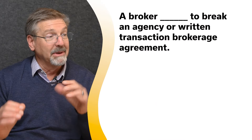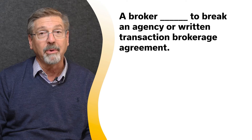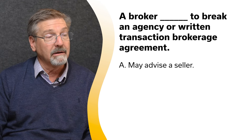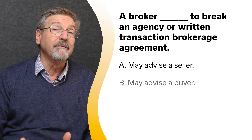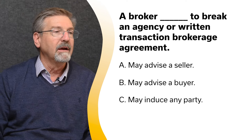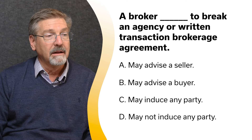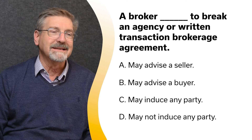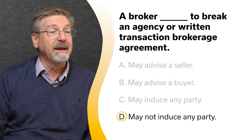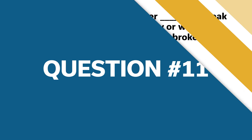A broker blank to break an agency or written transaction brokerage agreement. A. May advise a seller. B. May advise a buyer. C. May induce any party. Or D. May not induce any party. The correct answer is D — may not induce any party. No licensee may induce any party to break any agency or written transaction agreement.